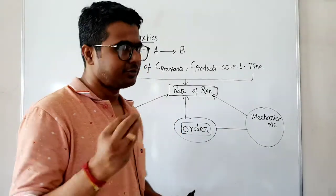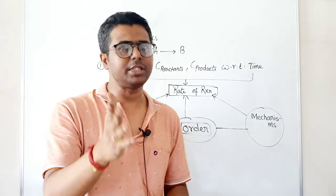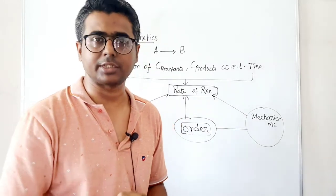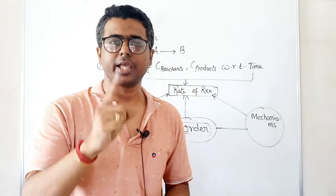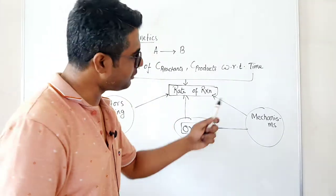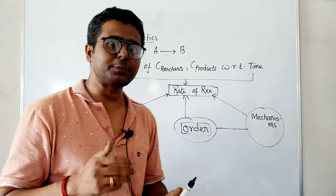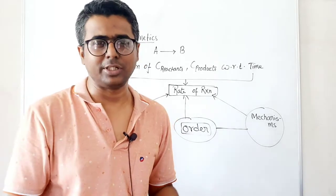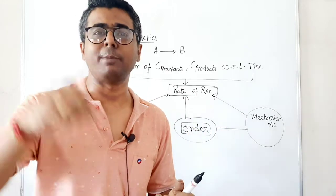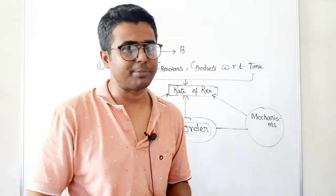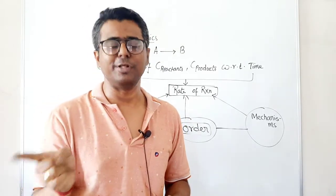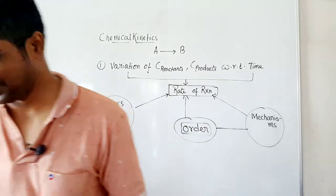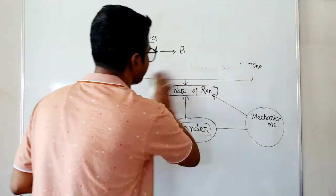Mechanisms also affect the rate of reaction. In organic chemistry you have already studied mechanisms — for example, SN1, SN2, E1, E2 reactions. Their mechanisms definitely affect the rate of reaction; activation energies, transition state complexes — everything is part of the mechanism. Which path you take will affect the rate, just like going from Kolkata to Delhi directly takes least time, but going via Mumbai takes much more time and reduces your rate of travel.